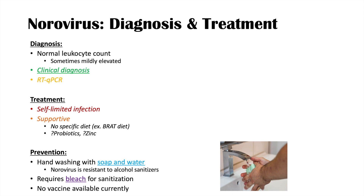In summary: norovirus is diagnosed clinically, with real-time qPCR used to identify the source of a viral epidemic. Treatment is supportive, as it is a self-limited infection. Prevention requires hand washing with soap and water — no alcohol sanitizers — and bleach must be used to sanitize a contaminated environment.